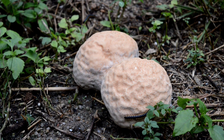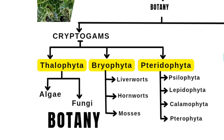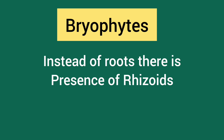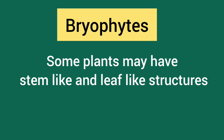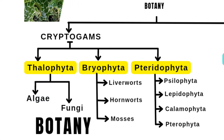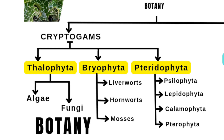Now we will discuss Bryophyta. Mostly they are thallate plants and roots are totally absent; instead of roots, there is the presence of rhizoids. In this bryophyte group, some plants may have stem-like and leaf-like structures, but roots are totally absent. Bryophytes are further divided into liverworts, hornworts, and mosses.